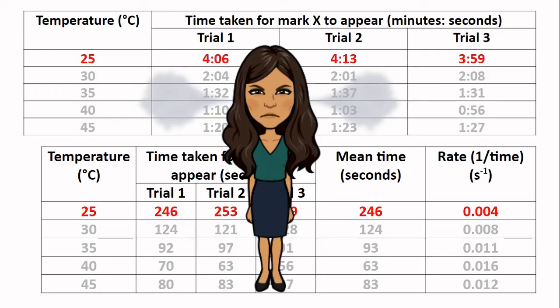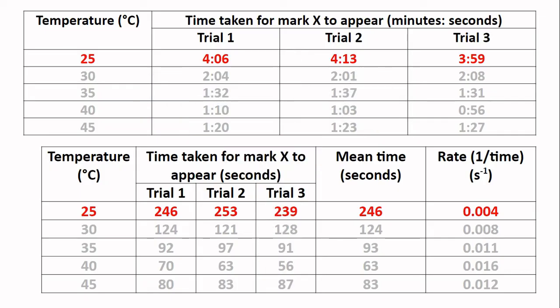In order to calculate the mean you must convert the minute portion first by multiplying that by 60 and then adding on the seconds. So in this particular example, we would have 4 minutes 6 seconds converted into 246 seconds, 4 minutes 13 seconds into 253 seconds, and 3 minutes 59 seconds into 239 seconds. We can then easily work out the mean which goes into the column where it says mean time, and then we can do 1 divided by the mean to work out the rate. I think working to three decimal places is pretty sensible at this stage.